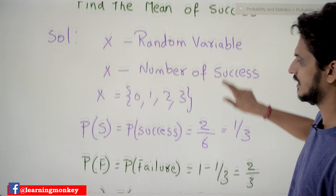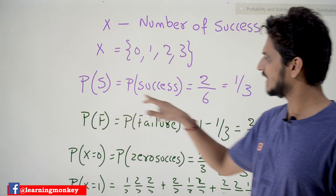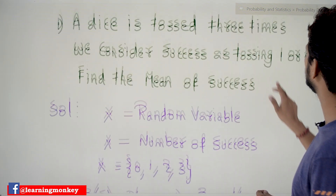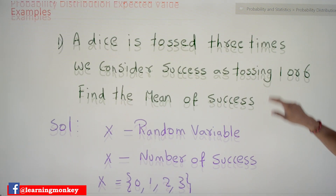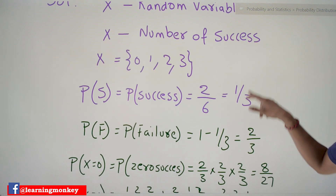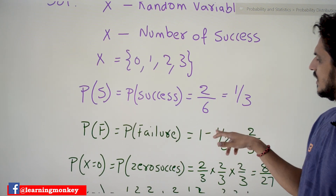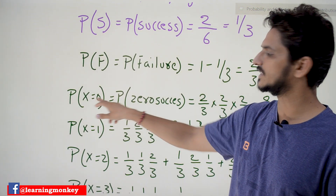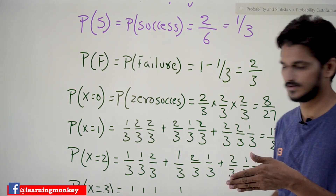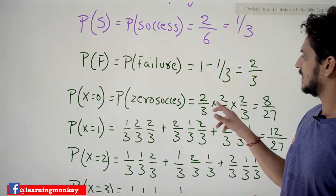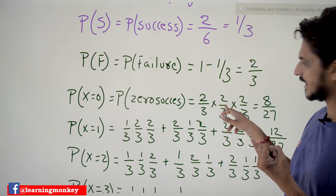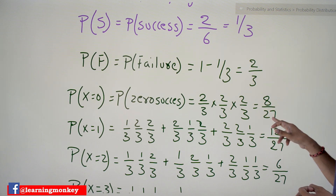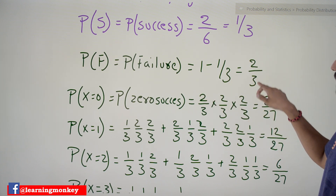Probability of success is two by six — since success is one or six, that is two out of six, which equals one by three. Probability of failure is one minus one by three, equal to two by three. So probability of X equal to zero means zero successes: two by three multiplied by two by three multiplied by two by three — all three times failure — which gives eight by twenty-seven.